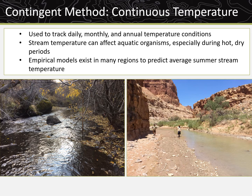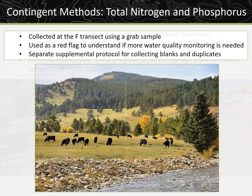Seasonal temperature monitoring is measured by deploying thermistors and is used to track daily, monthly, or annual temperature conditions. It is useful to understand potential limitations for aquatic organisms, especially during hot, dry periods. Alternatively, empirical models exist in many regions to predict average summer stream temperature; consult the National AIM team for more information. Total nitrogen and total phosphorus are collected at the F transect using a grab sample and are used as a red flag to understand if more monitoring is needed. High nutrient levels can occur from excessive nutrient inputs from fertilizer or livestock use, causing eutrophication, or can be evidence of accelerated erosion of certain geological formations. Grab samples have additional protocols for blank and duplicate samples to ensure data quality.